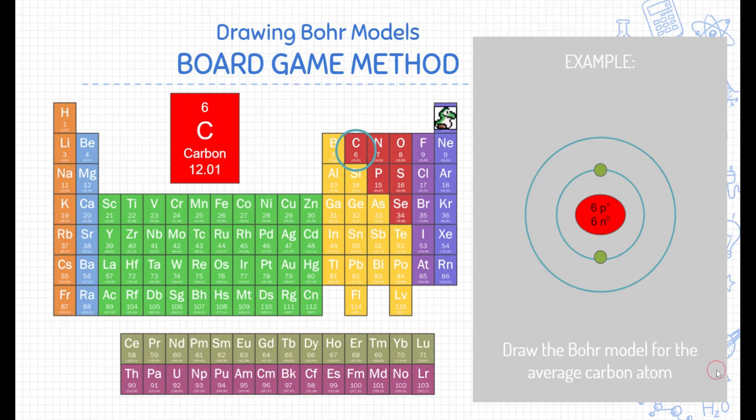So let's jump to the next energy level. The next electron goes on the second energy level, and then the next one also goes on the second energy level. I'm going to keep going until I get to carbon. Once I reach carbon, I'm done. This is the Bohr model for carbon. There are two electrons on the first energy level and four electrons on the second energy level, totaling six electrons.